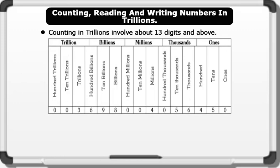Placing the digits in a place value: 3 is placed in the trillions column, 6 is placed in the hundreds of billions column, 9 is placed in the tens of billions column, 8 is placed in the billions column, 0 is placed in the hundreds of millions column, 0 is placed in the tens of millions column, 4 is placed in the millions column, 0 is placed in the hundreds of thousands column, 5 is placed in the thousands column.